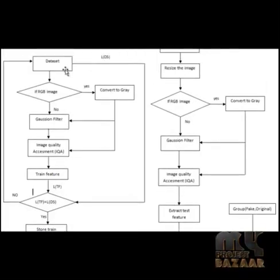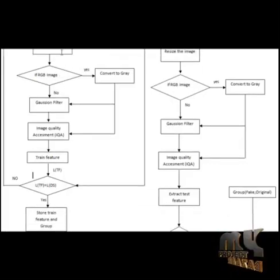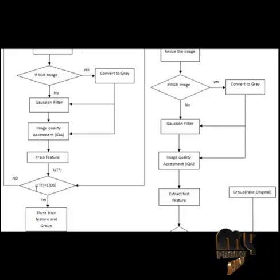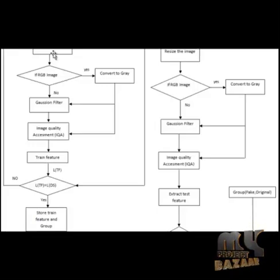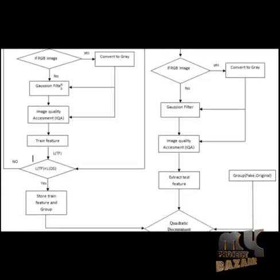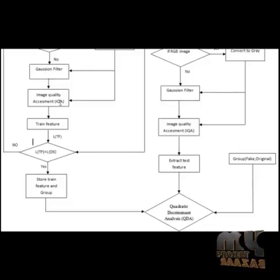The training feature is built from the dataset. First we load the whole dataset, then iterate through all images. We find the length of the dataset, and the dataset length will equal the length of the training feature. Each dataset image is converted to greyscale, passed through the Gaussian filter, and then through the image quality assessment process, where 11 quality values are extracted and stored as the trained feature.